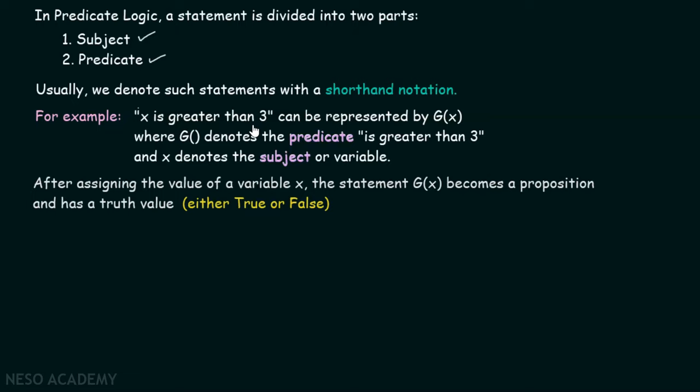Either it could be true or false. Right now, we cannot identify the truth value of the statement because we don't know what x is. But after assigning the value of x, we can identify the truth value of the statement. The statement is represented using the shorthand notation g(x), where g represents the predicate and x represents the subject. We can use these shorthand notations later in order to perform operations, because we can't write these statements again and again. That is why we represent them using shorthand notations.